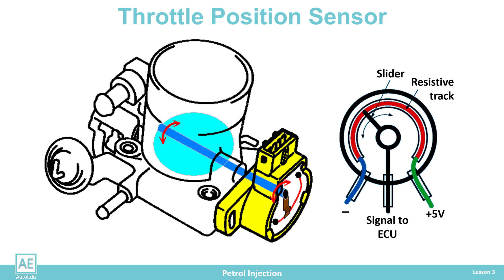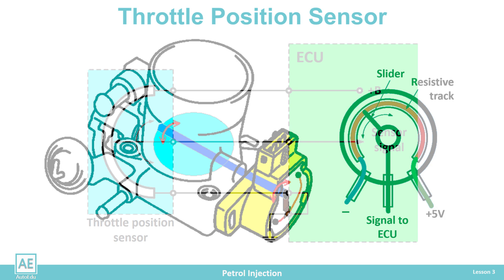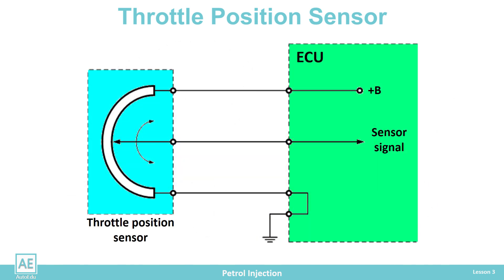The potentiometer slider is mounted on the throttle shaft and rotates with it. Power is supplied to the potentiometer from the ECU. The potentiometer slider is the third output of the sensor from which a voltage signal is sent to the ECU, equivalent to the angular position of the throttle.